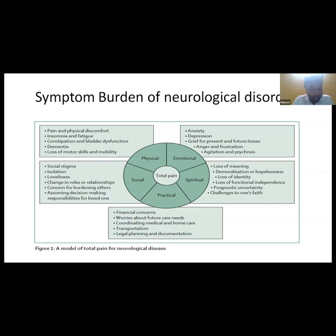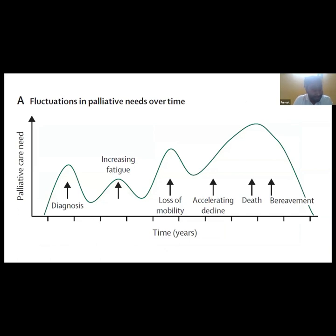Financial burden is also very significant — in Alzheimer's and Parkinsonism the survival is around 10 to 15 years, so financial constraints are a major concern. It is not just the patient we should consider; we must also take into account the issues of caregivers. As the disease progresses, there is fatigue, other symptoms, and especially in neurological disease, loss of mobility and independence, and finally death and bereavement.